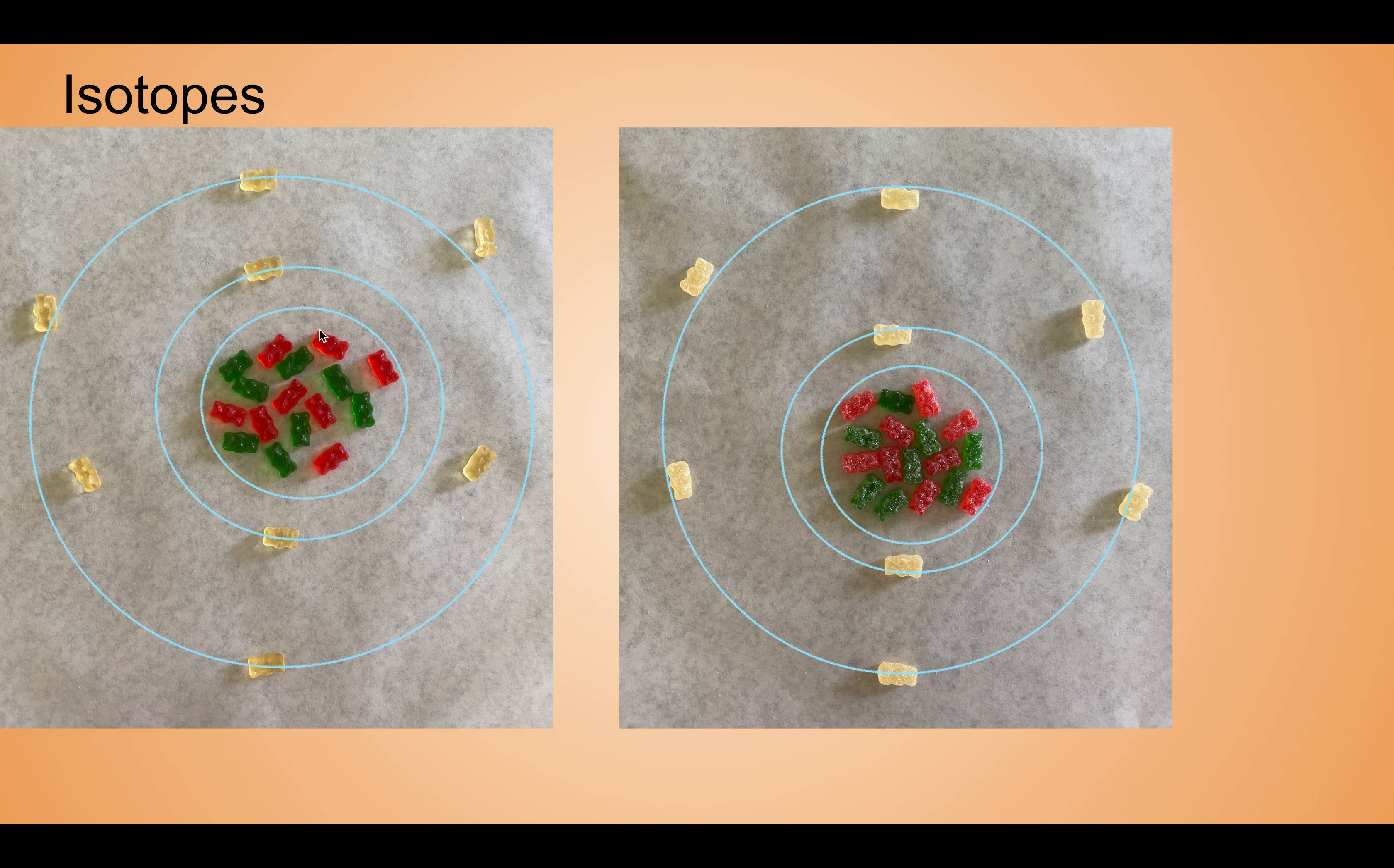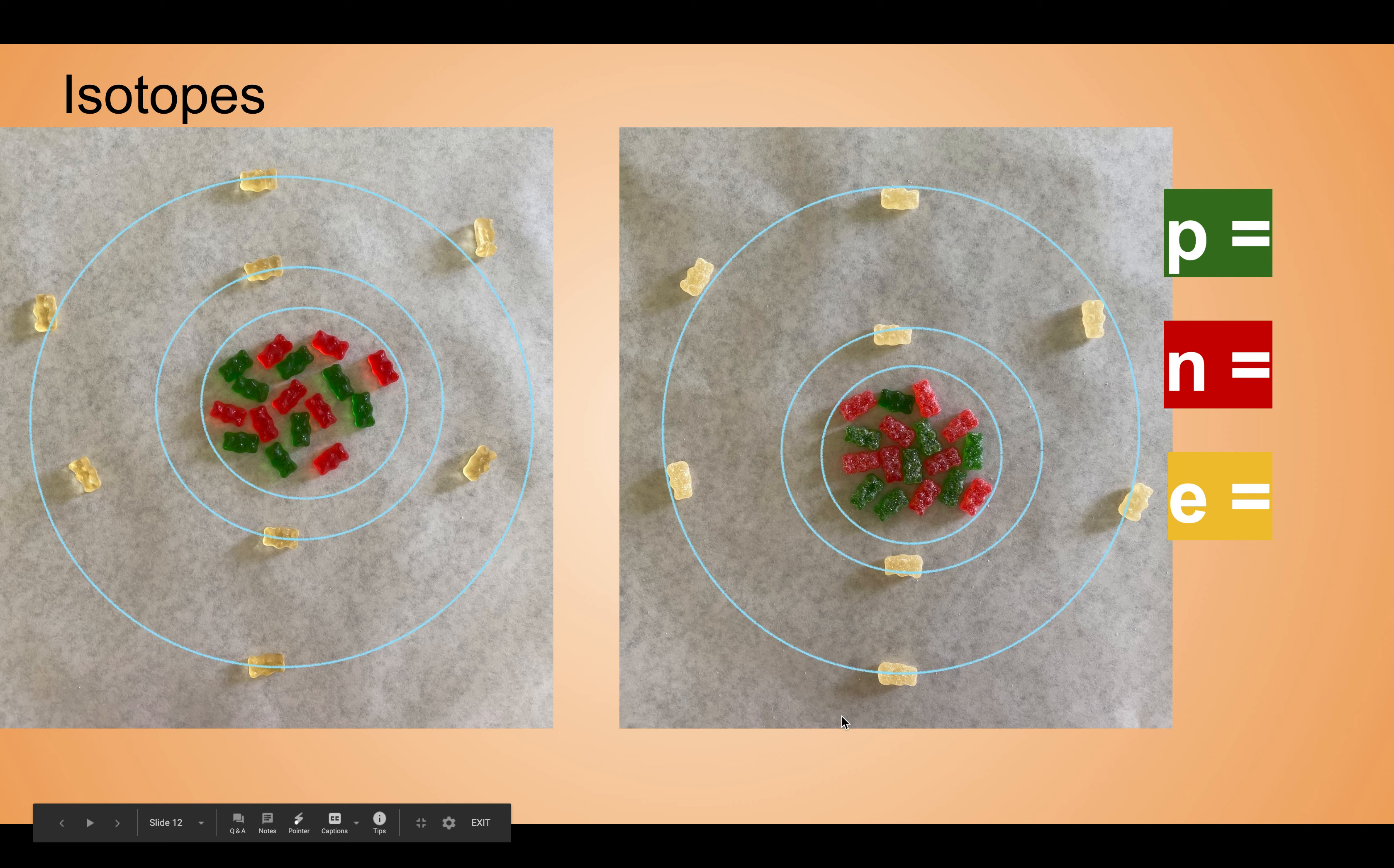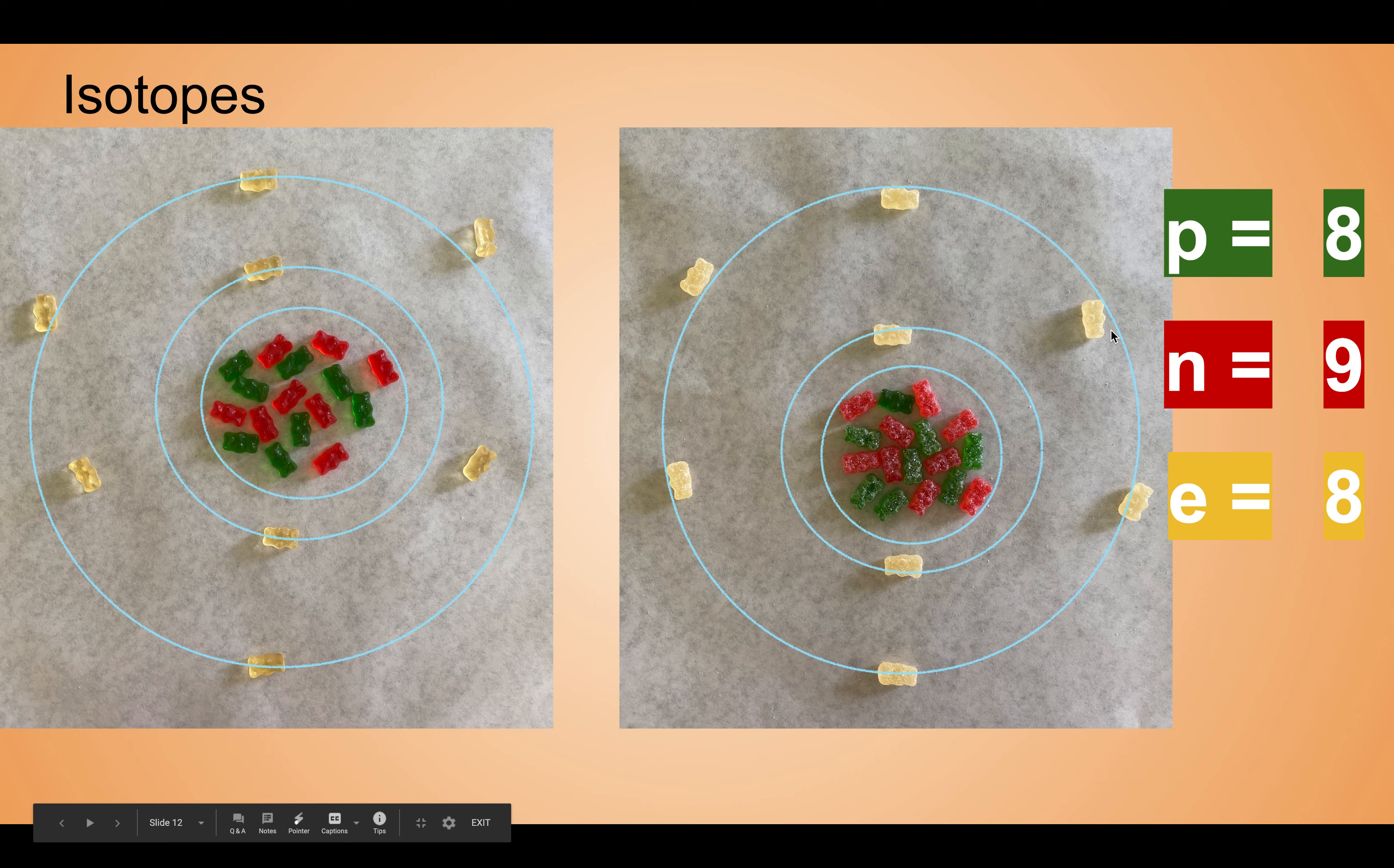Here's an example with our oxygen. Here's regular gummy bears and here's sour gummy bears just for distinction. This is the same picture as we saw before, the same Bohr model. I did a little bit better job of making a circle with the sour ones. How many of each of these subatomic particles do we have? How many protons do we have in this isotope of oxygen? Yep, it's eight. How many neutrons do we have?